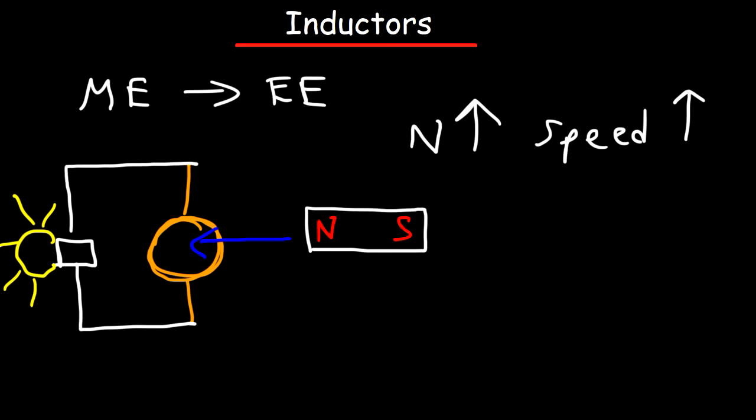The magnetic field generated by the magnet has to be changing with respect to the coil as you move it into and out of the coil. If the magnetic field is constant — if it's not changing — no induced current will be created in the coil.